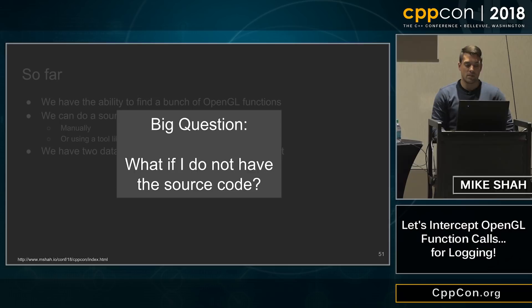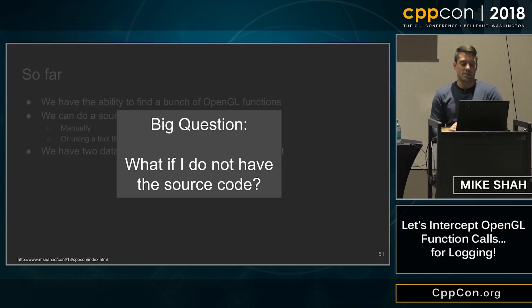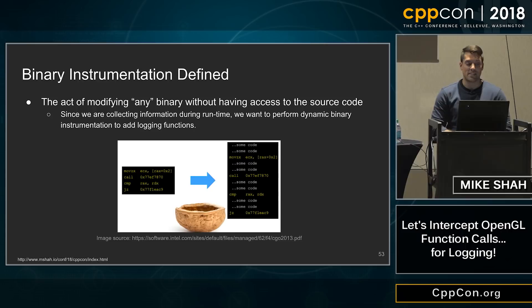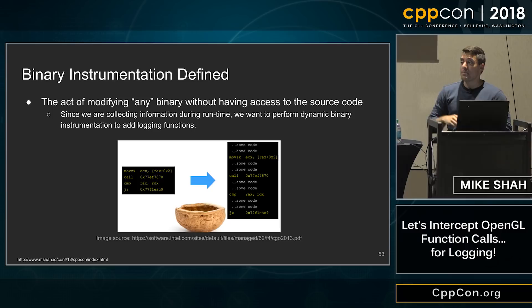The big question is: what if I don't have the source code but still want to know what's going on? If I'm an artist on the team who wants to investigate without digging into the code, what do I do? We need some other strategies, and these fall under dynamic binary instrumentation. Binary instrumentation is the act of modifying some binary without access to the source code. Since this is happening during program runtime, we're doing this dynamically — injecting some code to make it bigger and have our logging functions.